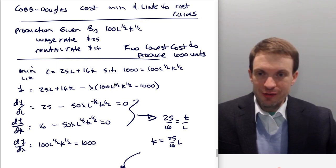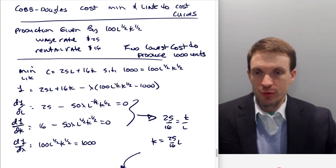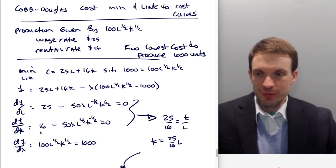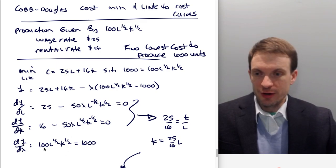When you're taking the partial or derivative of a power, you're going to reduce the power by one. So one half minus one is minus one half. Something similar for our partial with respect to capital, so 16 minus 50 square root of L times K to the minus one half equals zero. The partial with respect to the Lagrangian multiplier is just the constraint. I've rearranged it here because I wanted to save the step of setting this whole thing equal to zero.